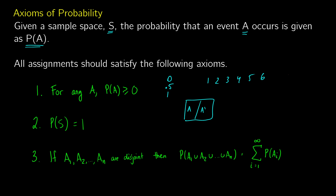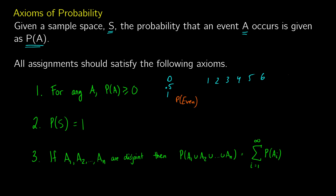Finally, the third axiom says that if all of our events are disjoint, then the probability of any of those events occurring — A1 or A2 or dot dot dot up to A_N — is just the sum of their individual probabilities. For example, the probability of rolling an even number equals the probability of rolling two plus rolling four plus rolling six, since each of these are independent events.